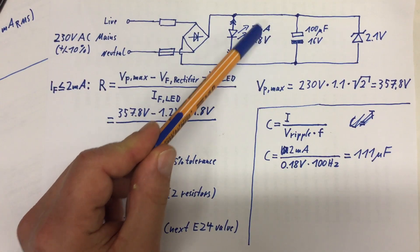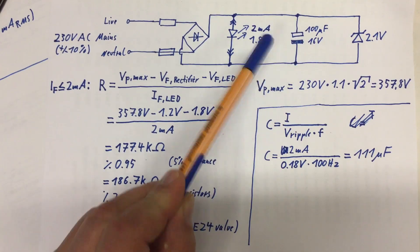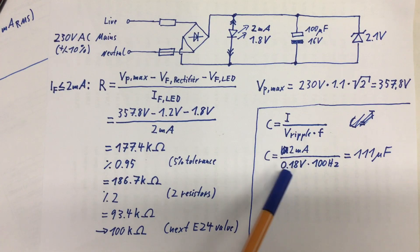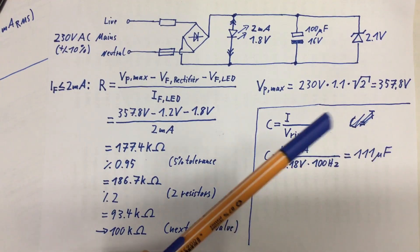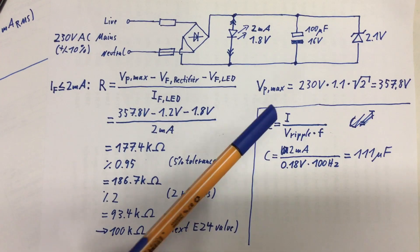The 100 microfarad 16-volt capacitor does the job. We calculated a ripple voltage of 0.18 volts. Theoretically, we got with 100 microfarads aboutish 100 millivolts, 110 millivolts ripple voltage. So I'm happy.